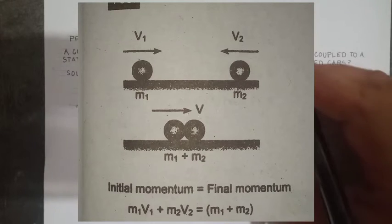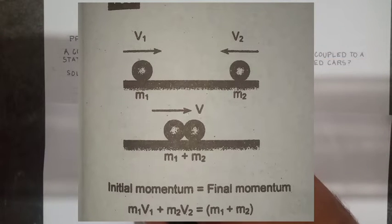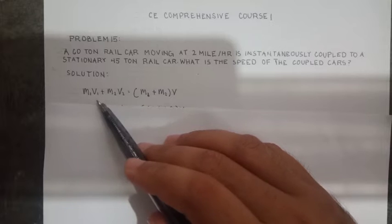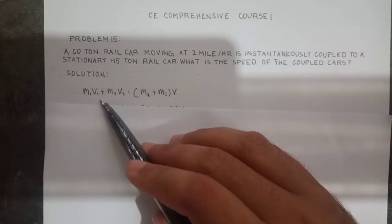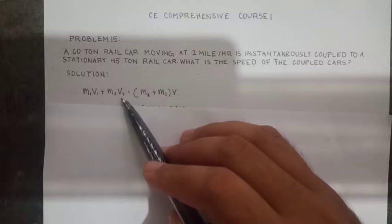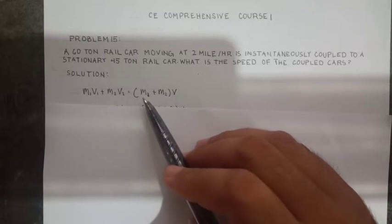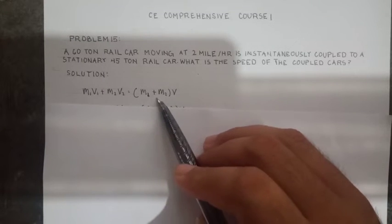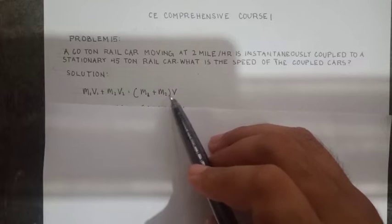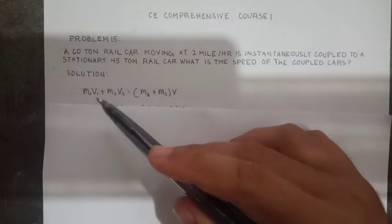This is the formula we'll use: M sub 1 V sub 1 plus M sub 2 V sub 2 equals M sub 1 plus M sub 2 times V.